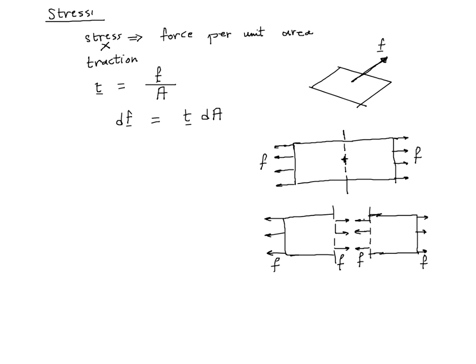If the total force applied is F, it is not difficult to see that the internal force on the interface is also equal to F in order to maintain horizontal balance. This illustrates another important rule: if a body is in equilibrium, every part of the body is also in equilibrium. From here, the traction is F over the area of the vertical section.